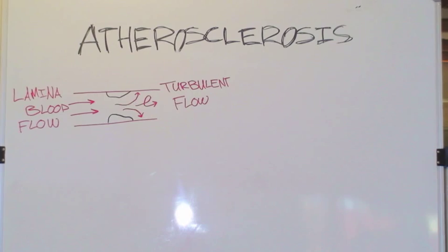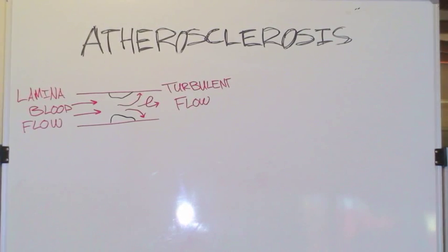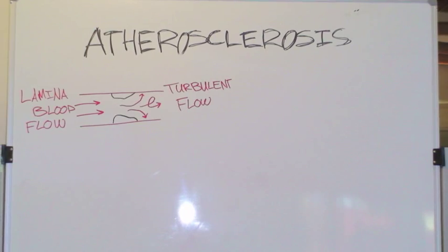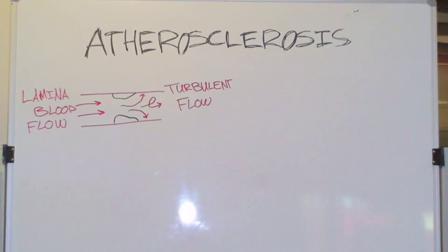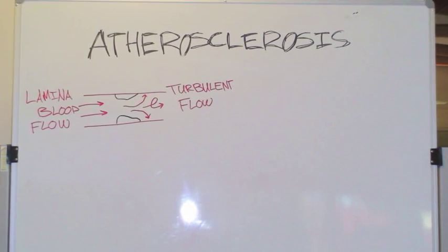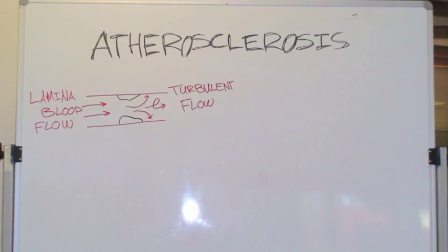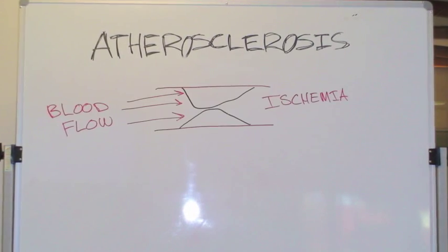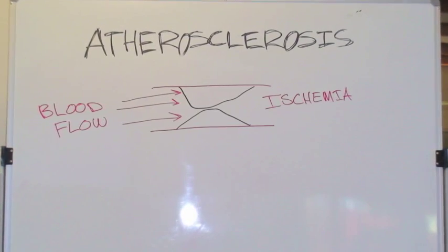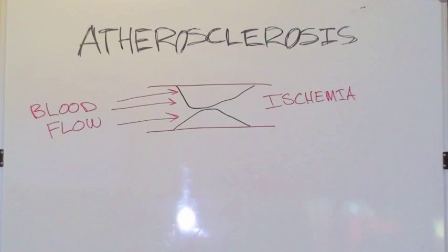Plaque and thrombi buildup in the vessels can disturb the laminar flow of the blood, causing inflammatory and coagulation factors to contact the vessel wall and activate. This causes further vessel damage. If the plaque sufficiently occludes the vessel, ischemia may occur in tissue distal to the occlusion, resulting in necrosis and apoptosis.